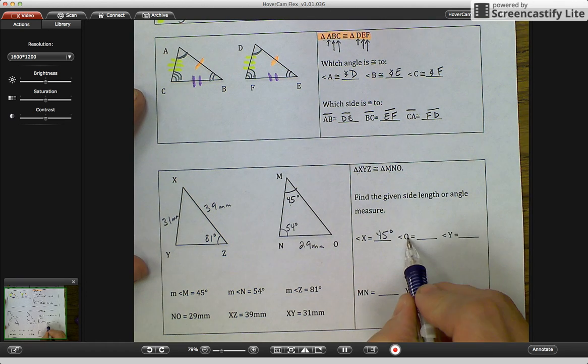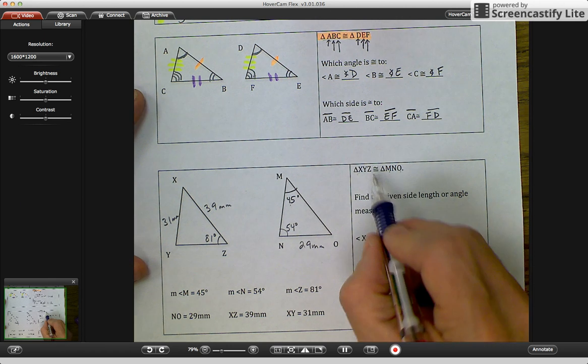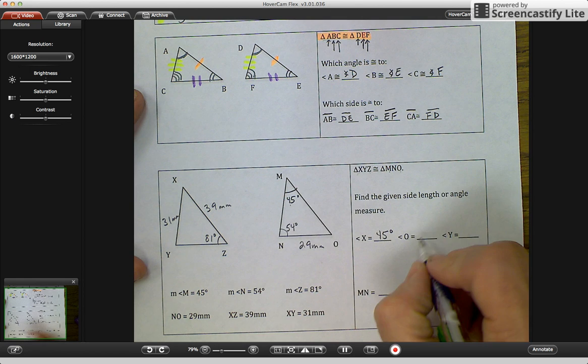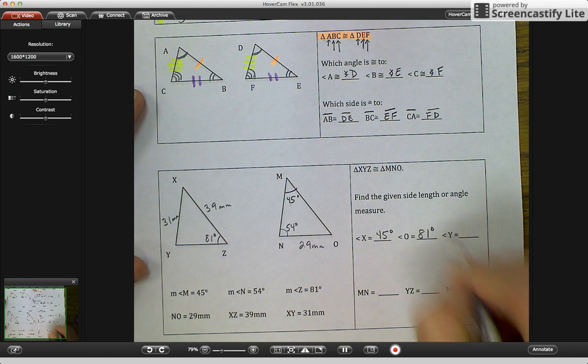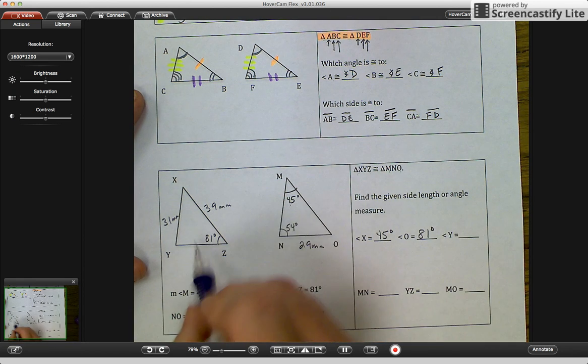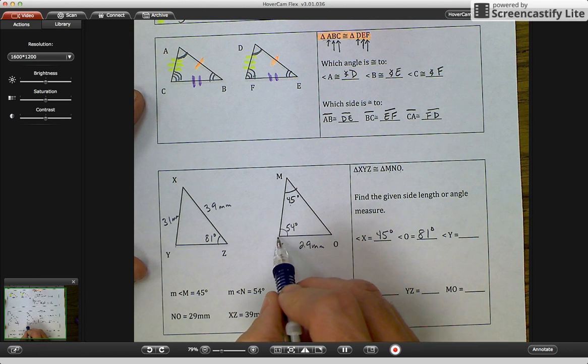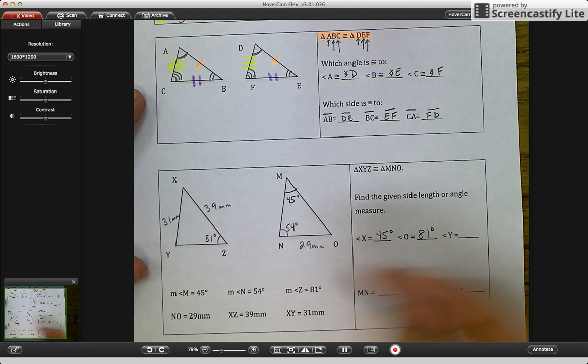Angle O is the third letter is congruent with angle Z. So angle O, angle Z, 81 degrees. And angle Y is congruent with angle N. And N is 54 degrees.